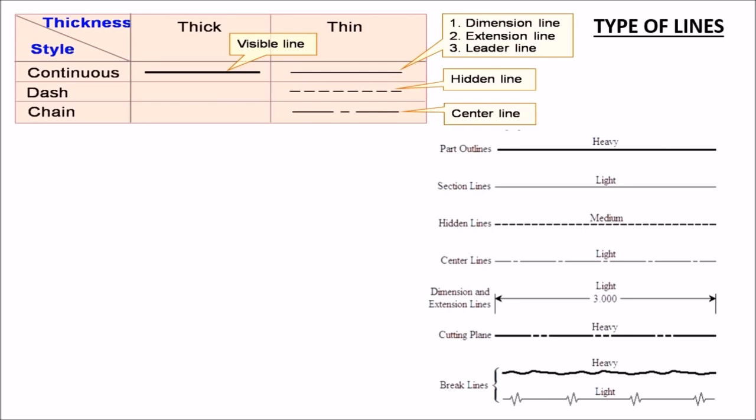Another frequently asked topic is the type of lines. Generally, there are thick lines and thin lines. Thick lines are the visible lines which plot out the margins like footing, brickwork which are originally existing. The thin lines are the dimension lines, extension lines, ladder lines. The dashed lines are also known as hidden lines and the dashed line with a simple dot is known as the center line.